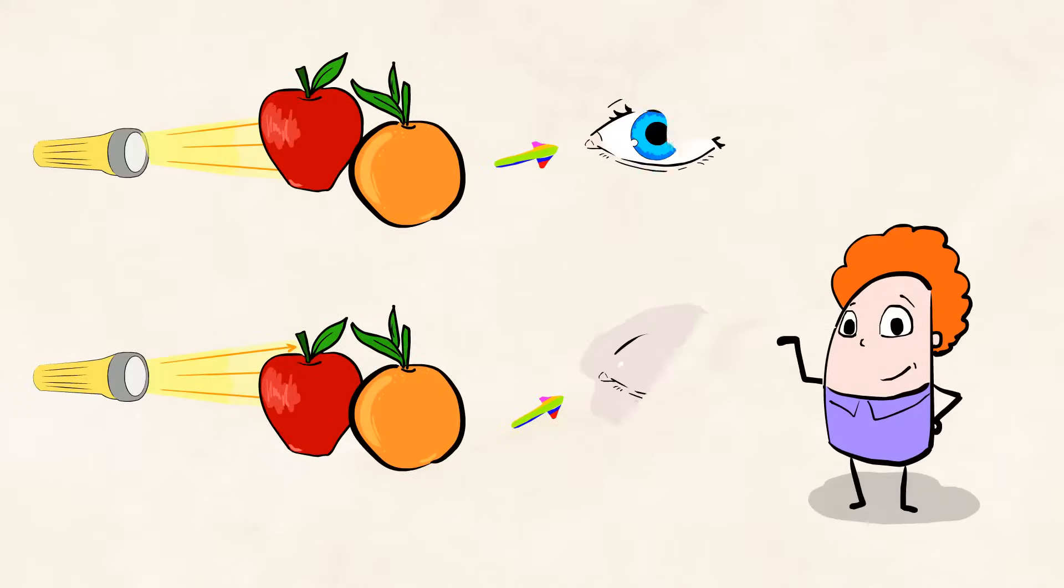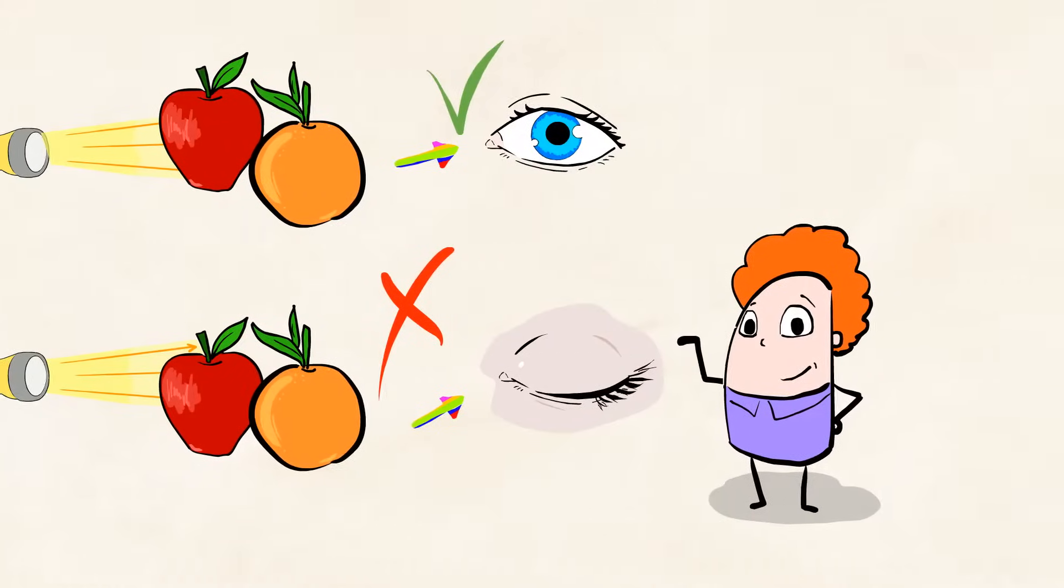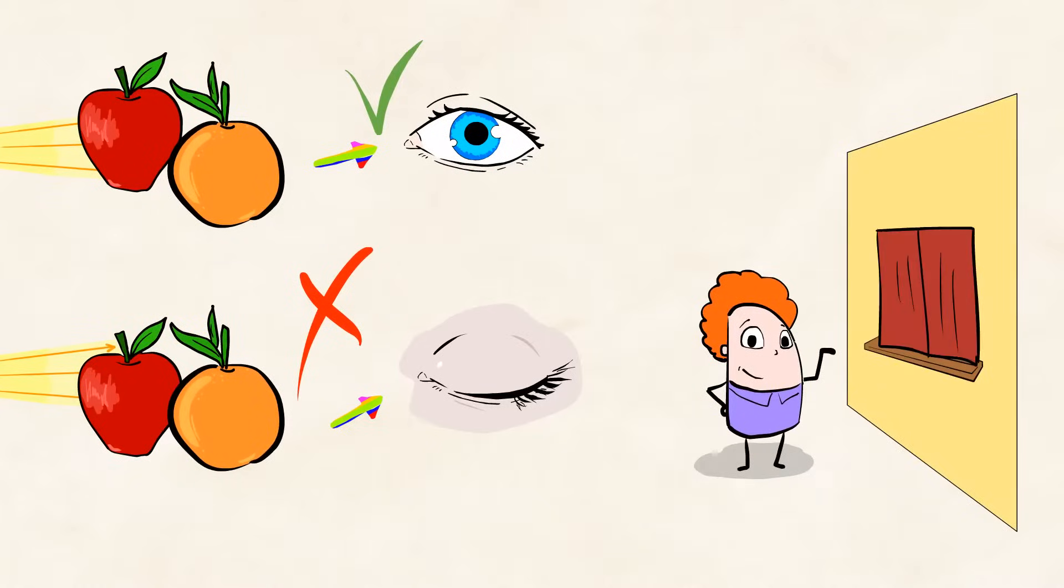But don't blink or you might miss out on something. There might be light around us, but when we close our eyes, it's like we shut our own blinds and it's dark again.